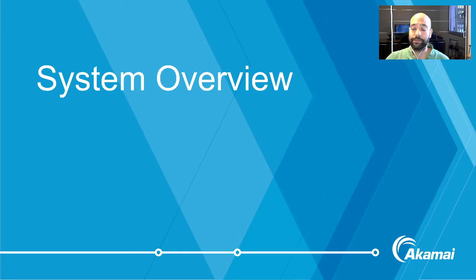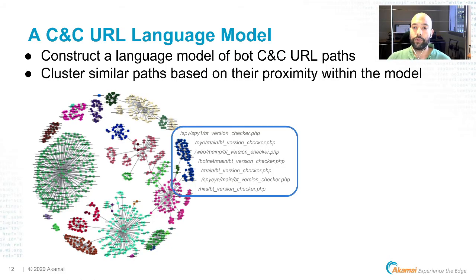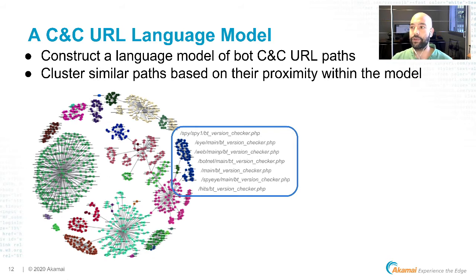Moving to the system overview. The first step is constructing a language model of URL paths. We start with a dataset of URLs known to be related to botnet command and control communications — more than 150,000 examples. The language model maps each URL path into a point within a large hyperspace, where points are in proximity only if they share similarity in their character sequences. For instance, all SpyEye malicious URL paths ending with 'btversionchecker.php' would be expected to cluster within proximity in the language model.